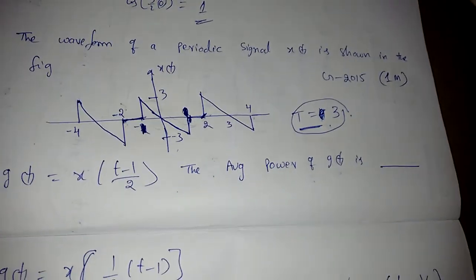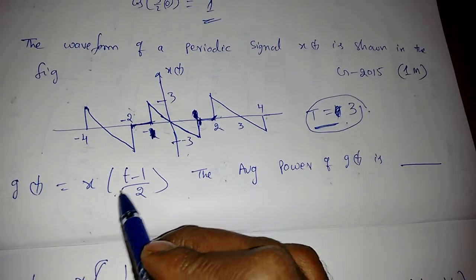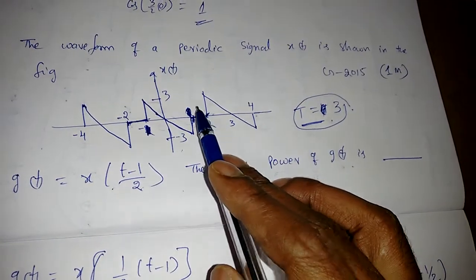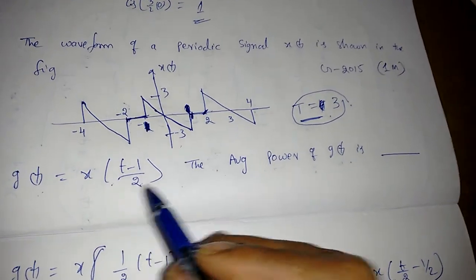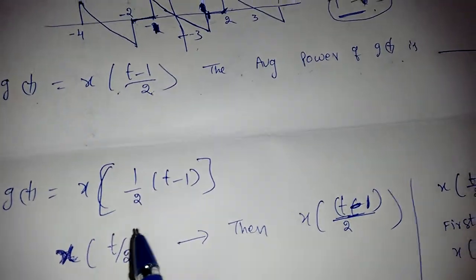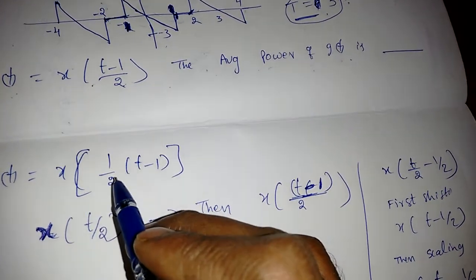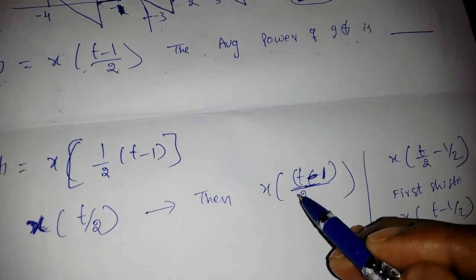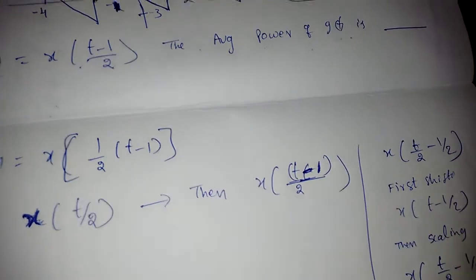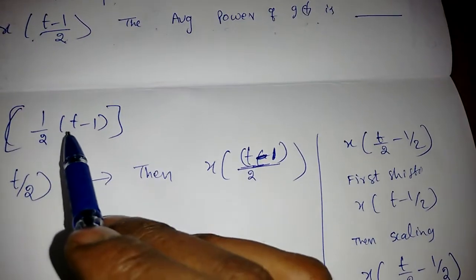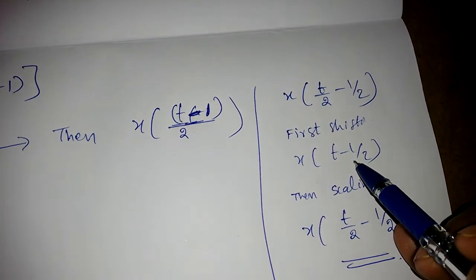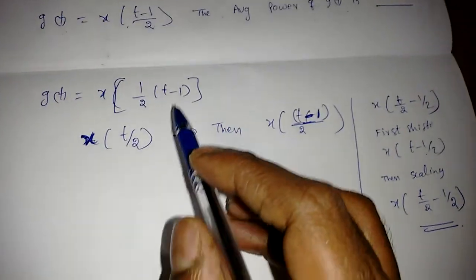We are given g(t) = x(t minus 1/2) and need to find the average power of g(t). Since it is a periodic signal, we first need to find g(t). There are two methods. Method 1: take 1/2 common to get x(1/2 times (t minus 1)) — first do scaling by t/2, then shift by minus 1. Method 2: first shift by t minus 1, then scale.